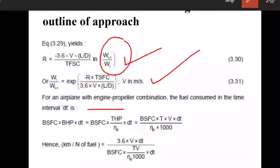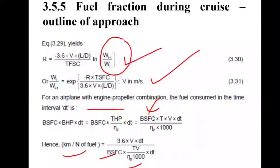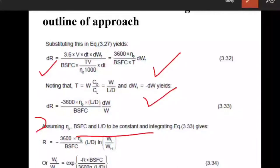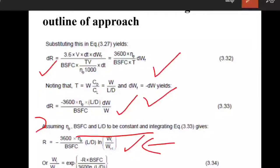For an airplane with engine-propeller combination, the same formula is used, but brake specific fuel consumption replaces thrust specific fuel consumption, and propeller efficiency is also included. Substituting these into the range equation, assuming all parameters constant except weight, and integrating in terms of Wi/Wi-1, we get the final Breguet range equation for the propeller-engine combination airplane.